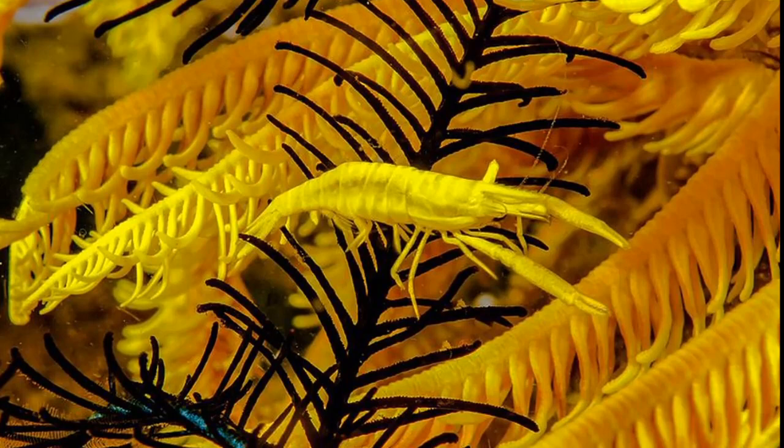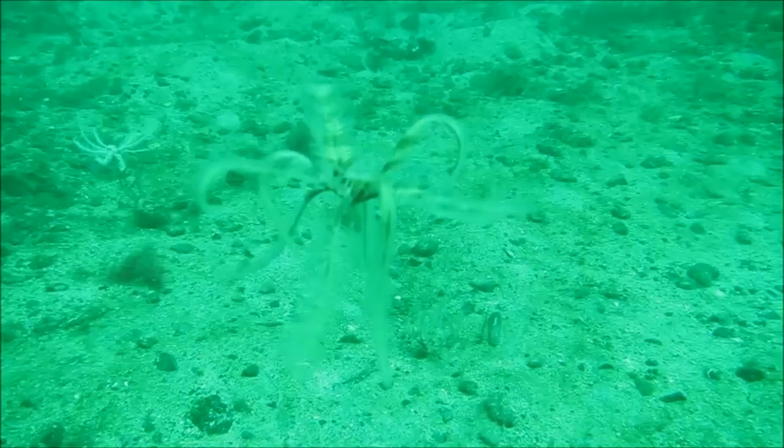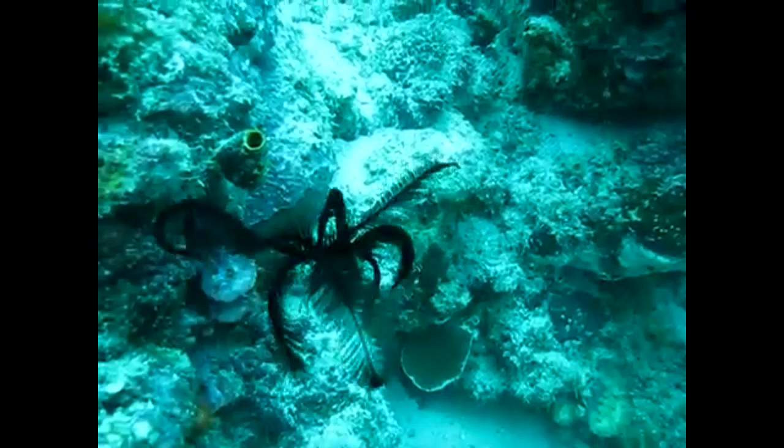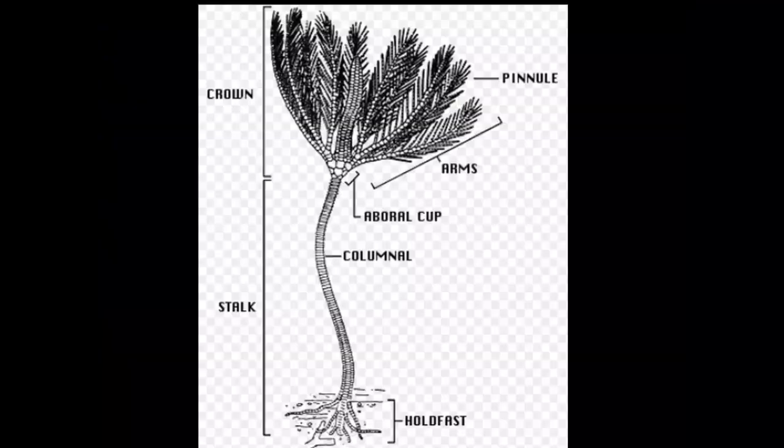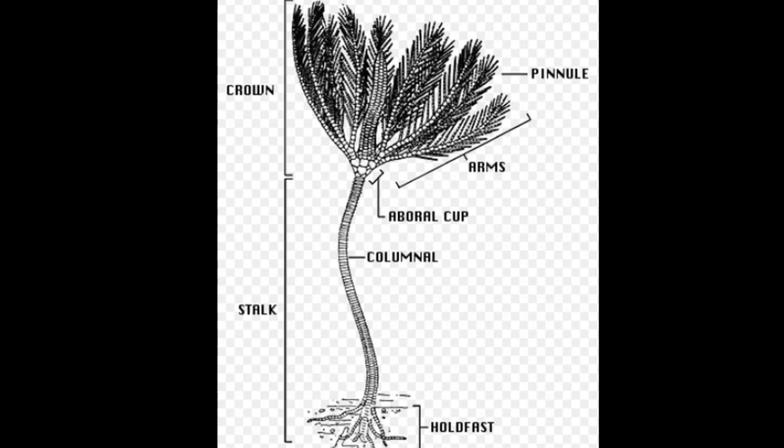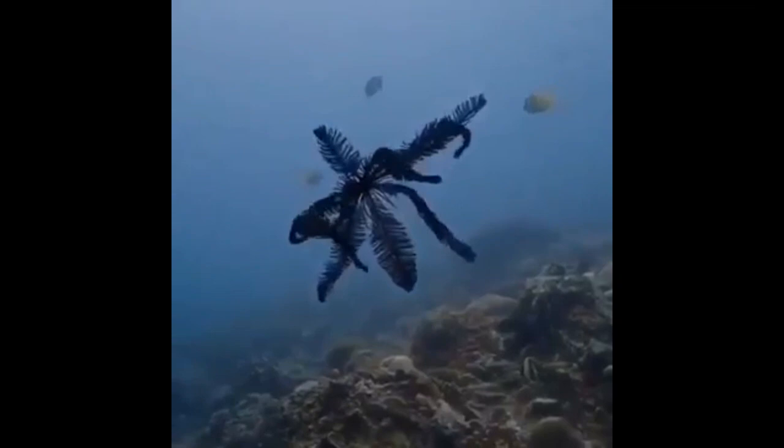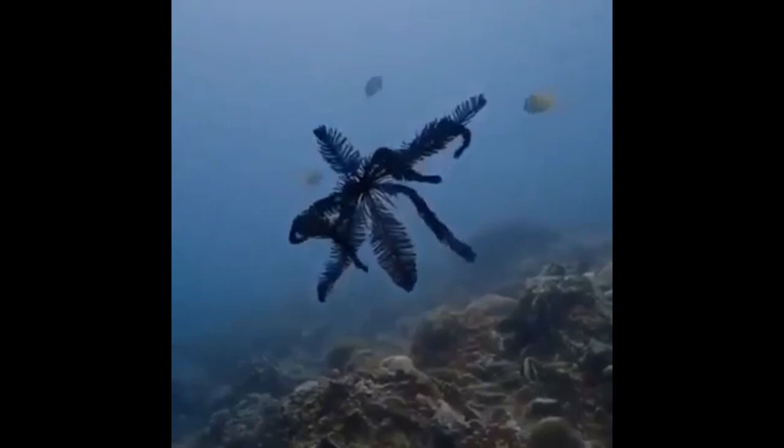Their limbs act as a shelter for many symbiotic organisms like shrimp. Feather stars are separated into males and females. After a female's eggs are fertilized, they will hatch into free-swimming larvae. Larvae develop into stalked juveniles that stay attached to the seafloor until they are ready to break away and become free-swimming adults.